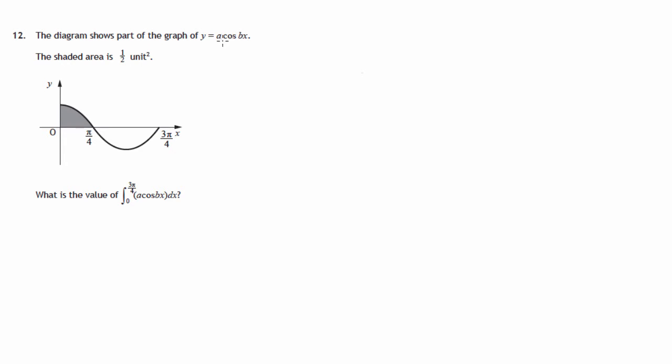Its amplitude we don't know and the period of it we're not sure of, but it's certainly based on a cosine graph transformed in some manner or another. And we're told that this shaded area from 0 to π upon 4 is half a unit squared.